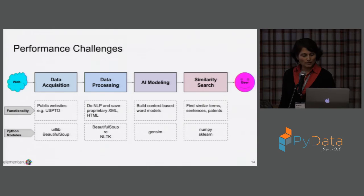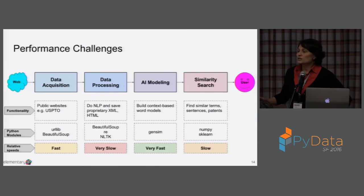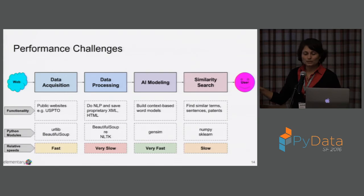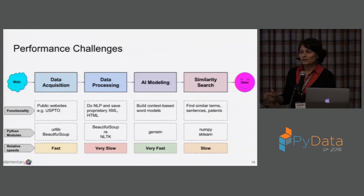Let's look at the performance challenges in a little more detail. At our first cut of architecture, data acquisition is fast in the sense that there's only so much you can do — it's the network speed that dominates. Data processing is our slowest point right now because we're doing a lot of NLP and saving in our own format. AI modeling with Gensim is awesome — it's optimized in Cython, blazing fast. Similarity search is a little slow but we think we can speed it up.